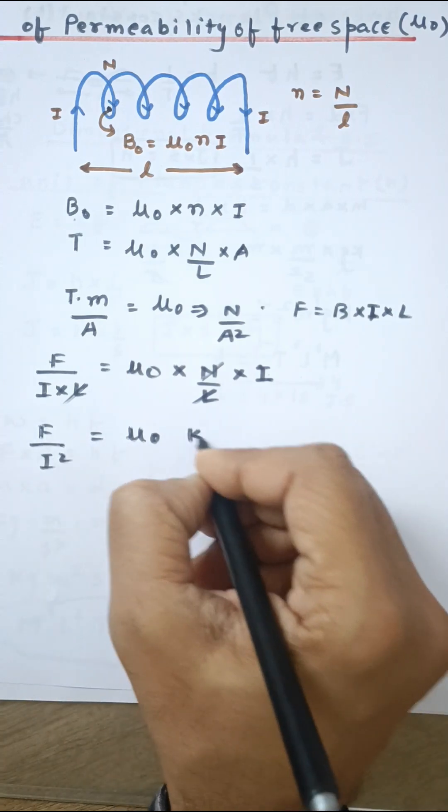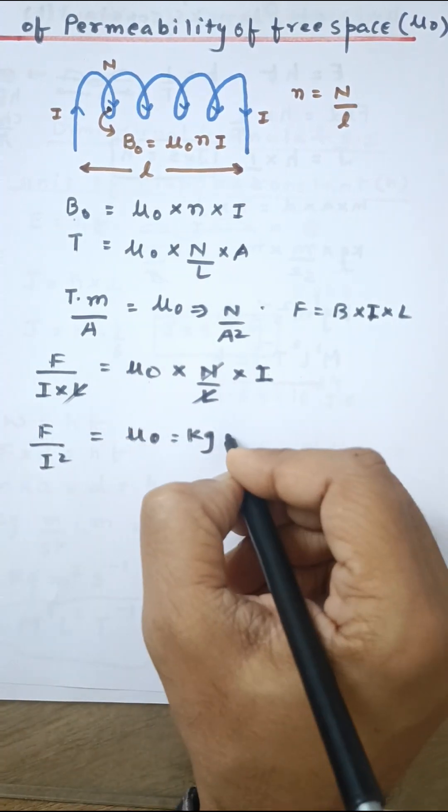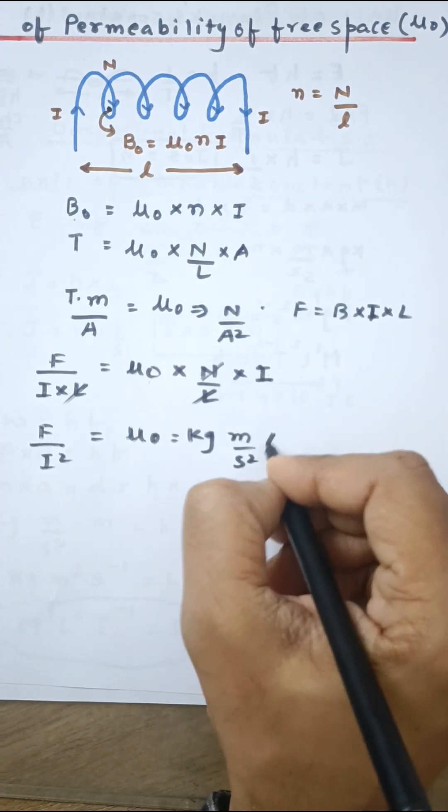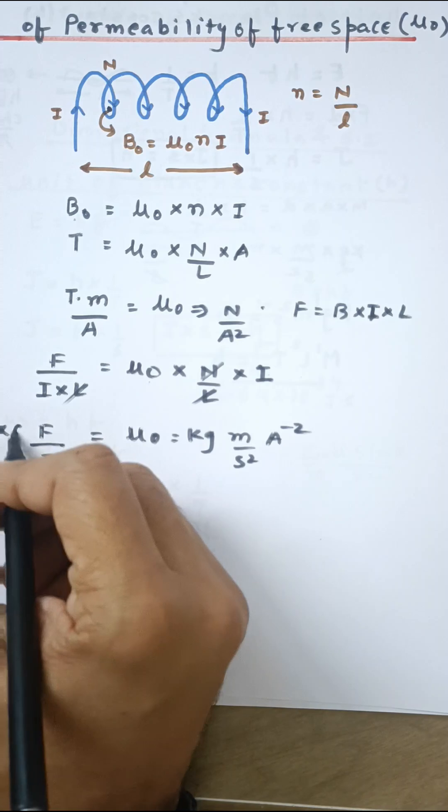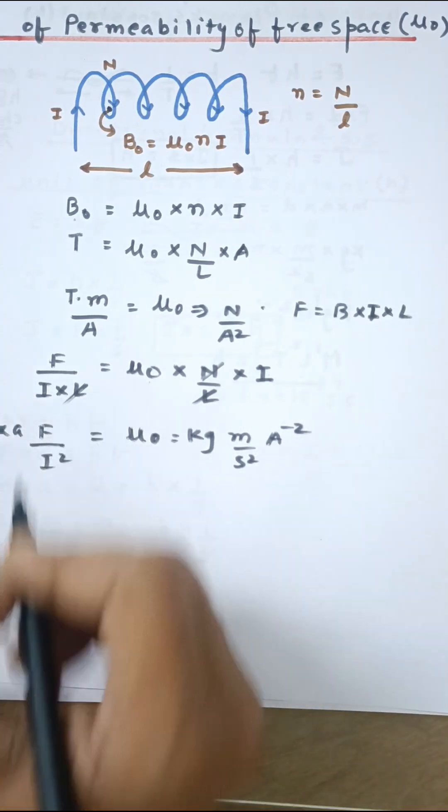And further, I am going to write this as kg meter upon second square, that is force, and then ampere raised to minus 2. So this can be written as M times A. This is kg meter upon second square, current square goes up.